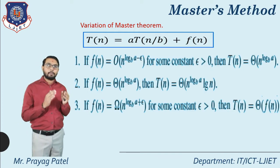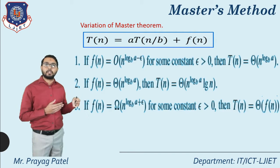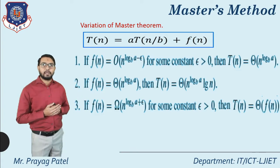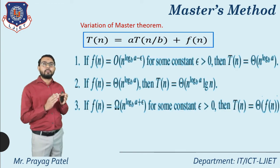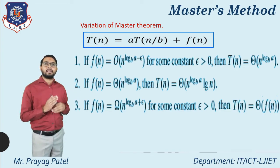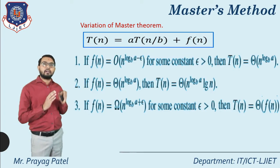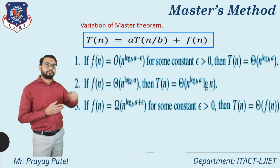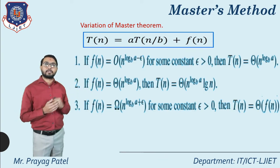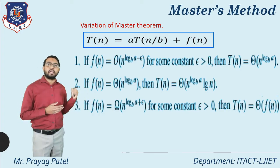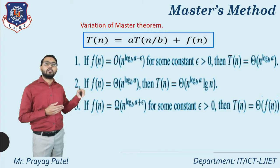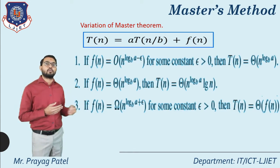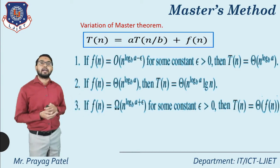For the variation, the three cases are: Case 1: if f(n) = O(n^(log a base b − ε)) for some ε > 0, then T(n) = Θ(n^(log a base b)). Case 2: if f(n) = Θ(n^(log a base b)), then T(n) = Θ(n^(log a base b) log n). Case 3: if f(n) = Ω(n^(log a base b + ε)) for some ε > 0, then T(n) = Θ(f(n)).